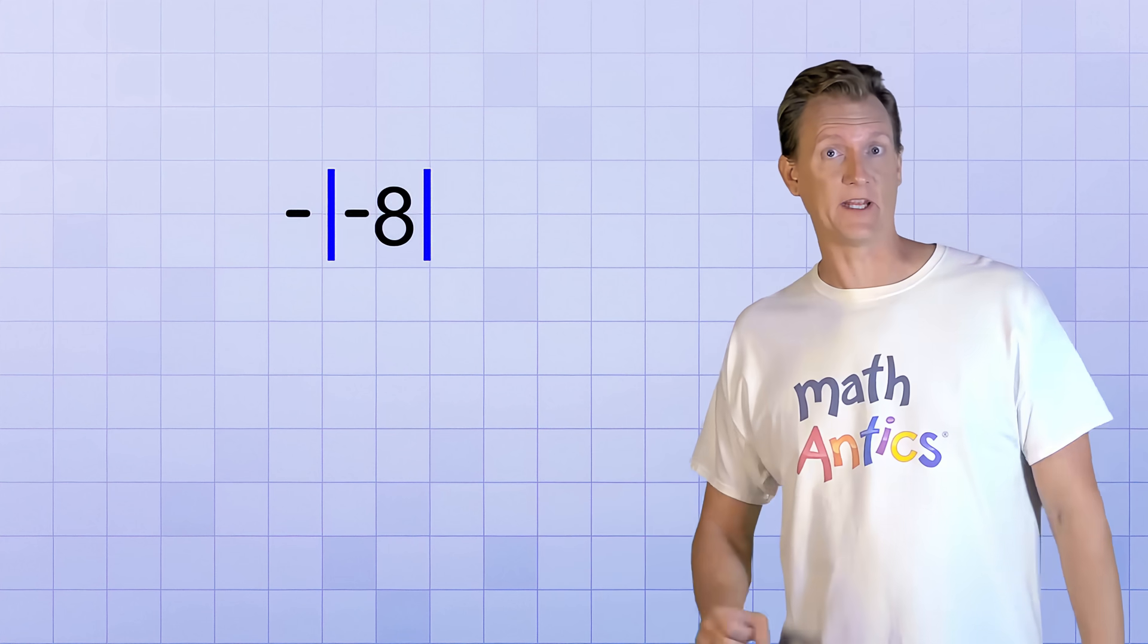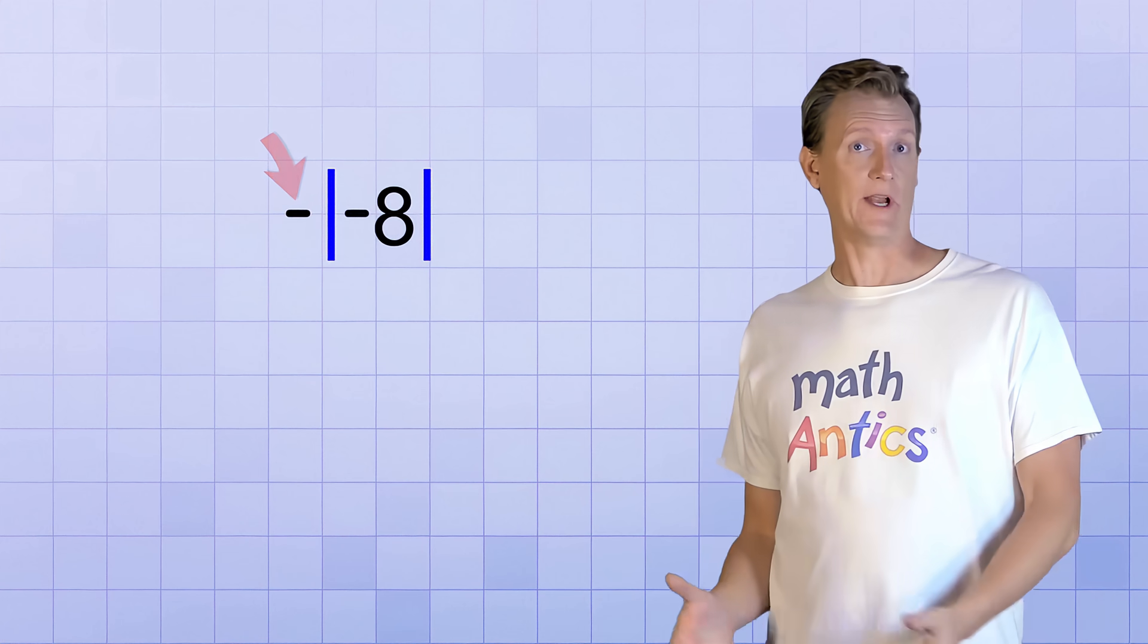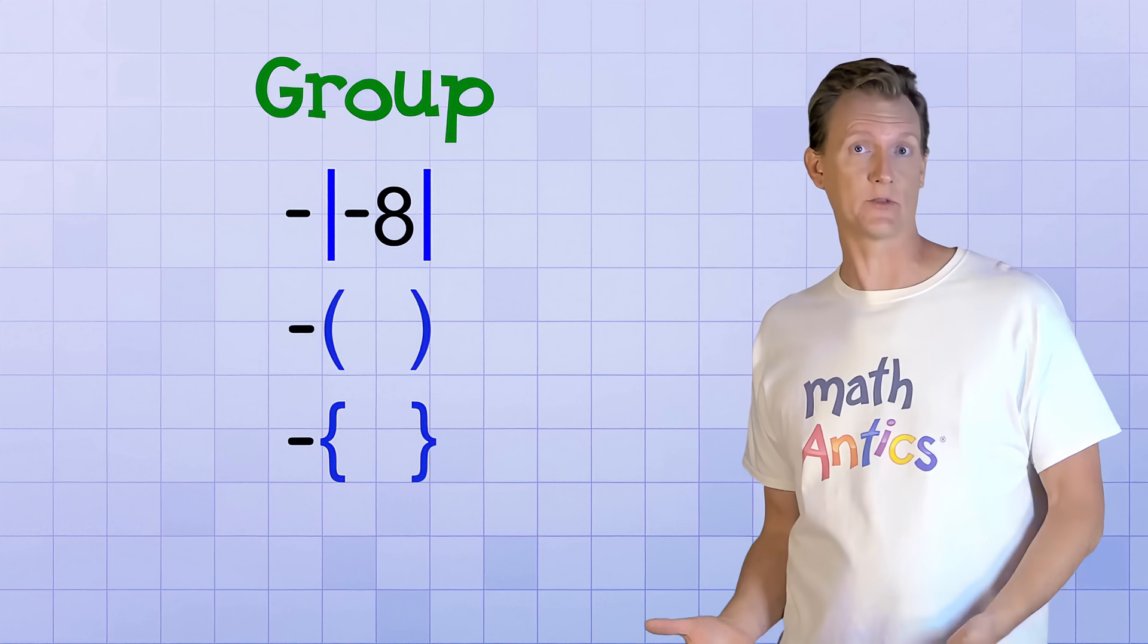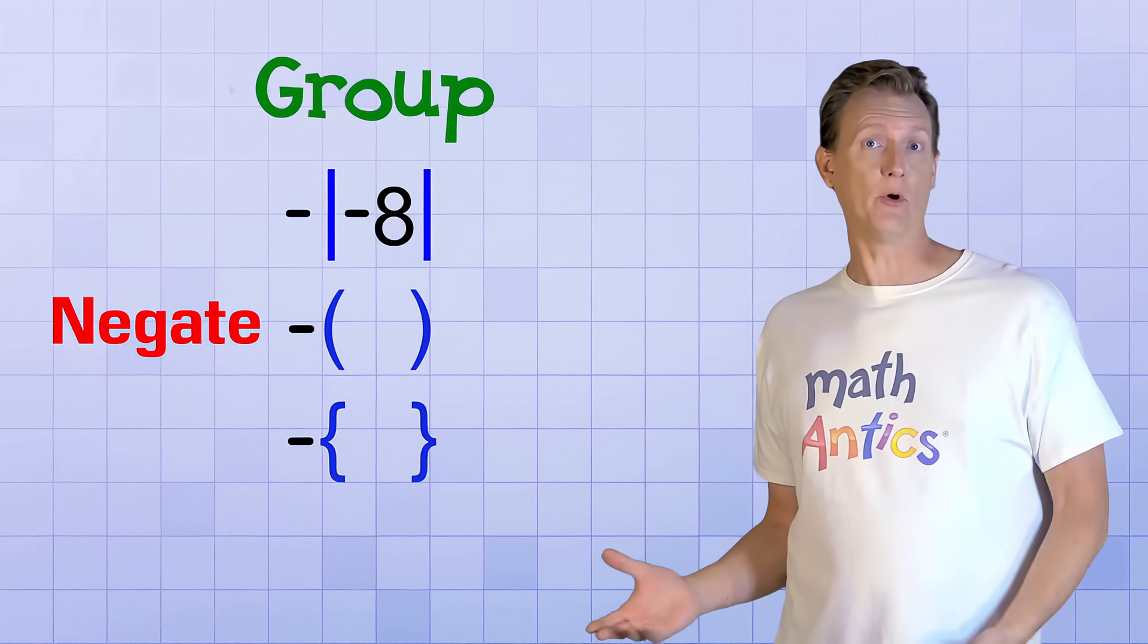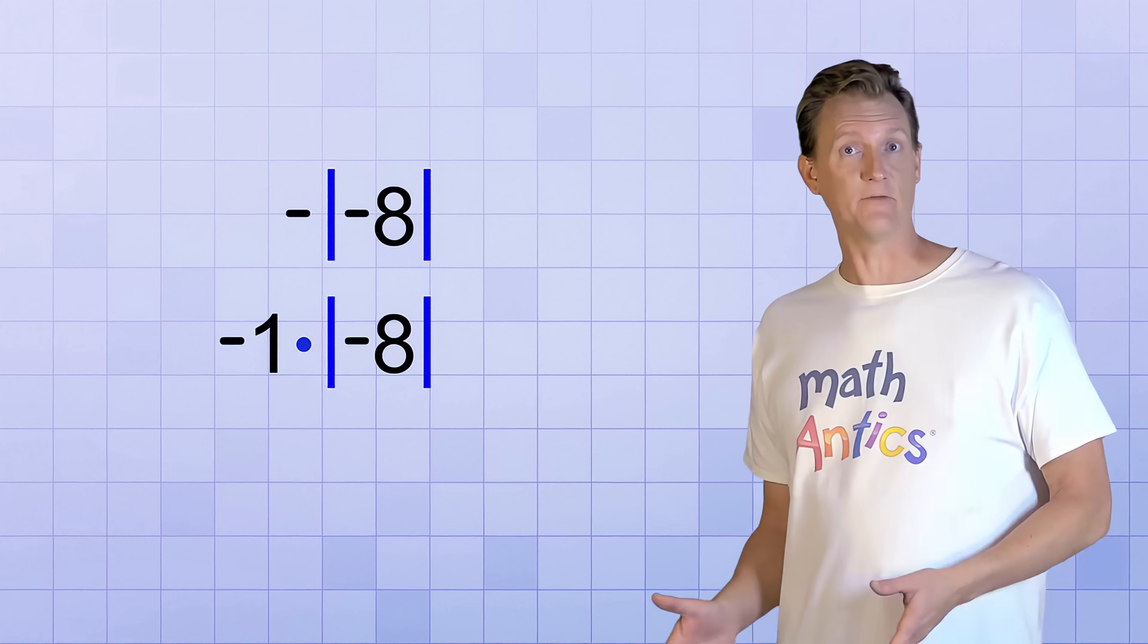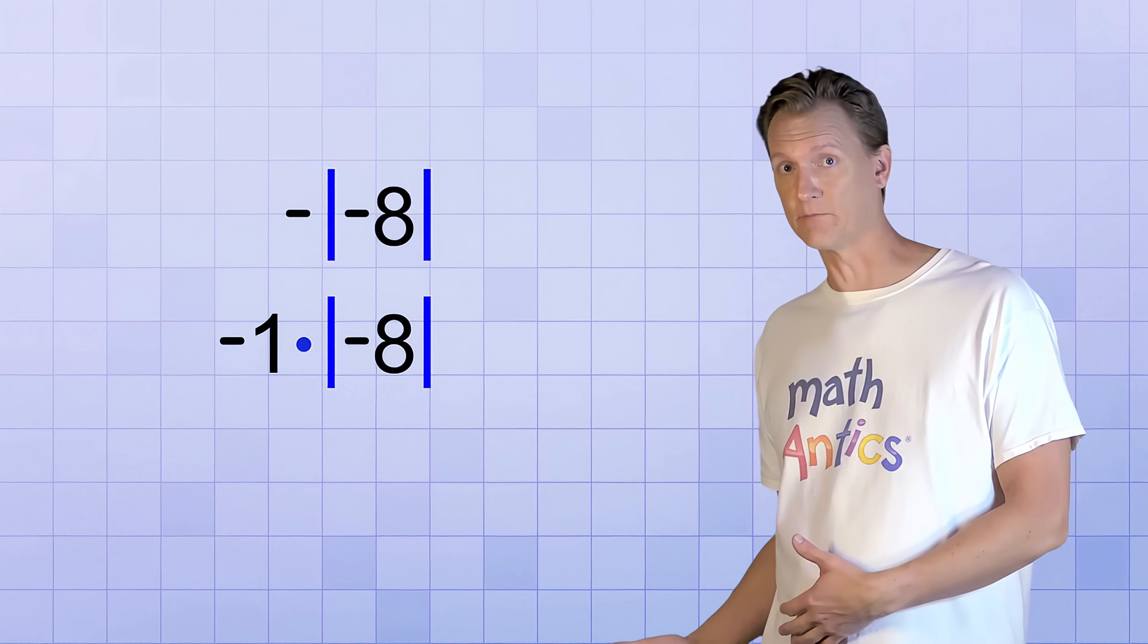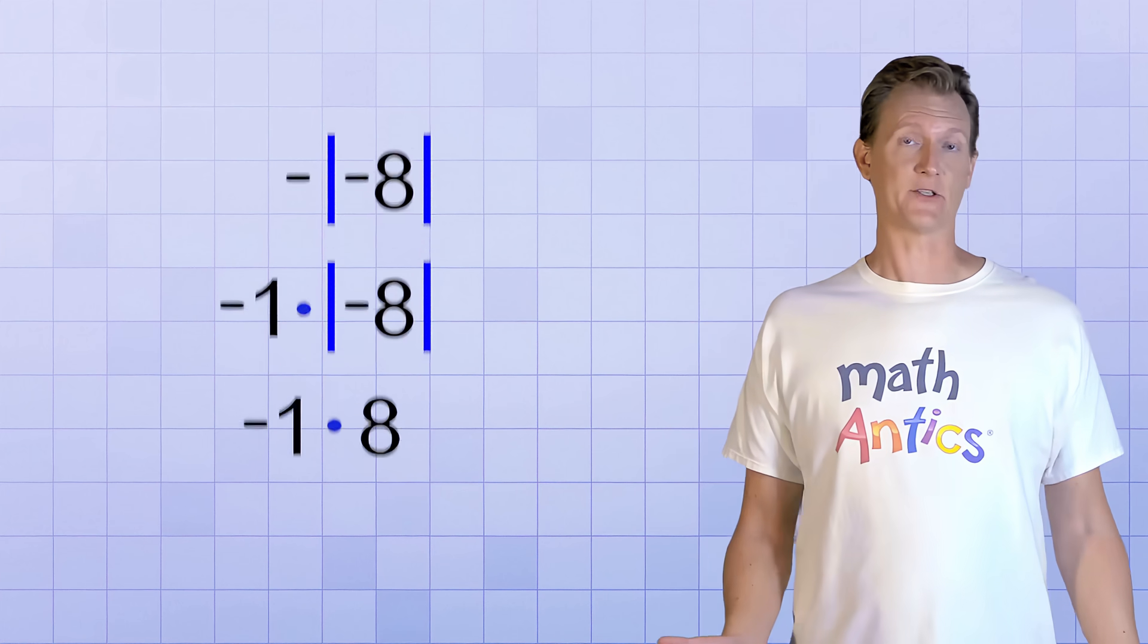That example was pretty easy, but what about this one? Negative absolute value of negative 8. Why is there an extra negative sign outside of the absolute value signs? Well, whenever you see a negative sign immediately outside and to the left of a group like parentheses, braces, or the absolute value signs, it means that you need to negate that group. That means you need to multiply that group by negative 1. So if it helps, you can think of this problem like this. Negative 1 times the absolute value of negative 8. And since absolute value signs are groups like parentheses, to simplify it we would first need to do the absolute value. The absolute value of negative 8 is 8. And then we multiply that by negative 1 and we get the answer negative 8.